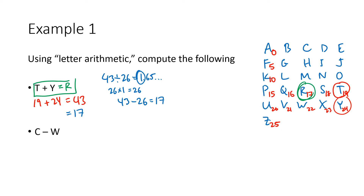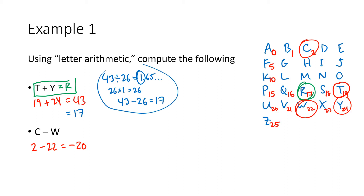Now let's do C minus W. C is in the top row, so that's letter number 2. W is letter number 22. And 2 minus 22 equals negative 20. Now this negative number is too small, so we make it bigger by adding 26. When we add 26 we get positive 6, and letter number 6 is the letter G. So C minus W equals G.